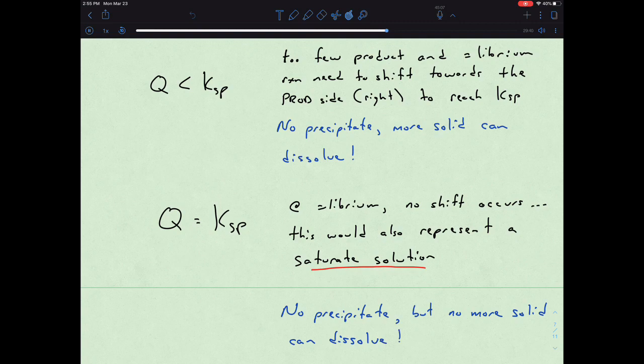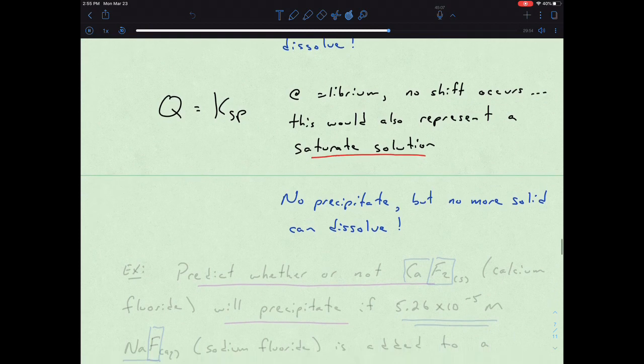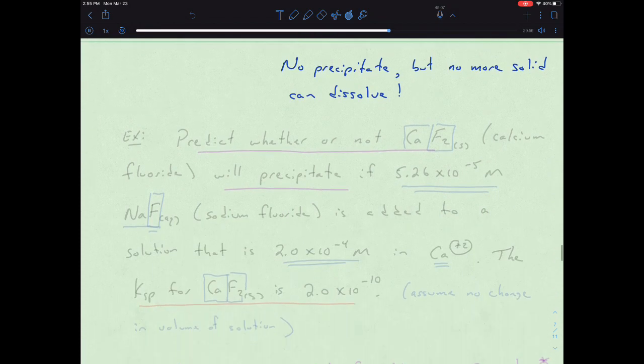We could obviously influence that with temperature, but we've been talking about keeping constant temperature here for that relationship. So let's look at an example of relating these two values, Q versus Ksp.